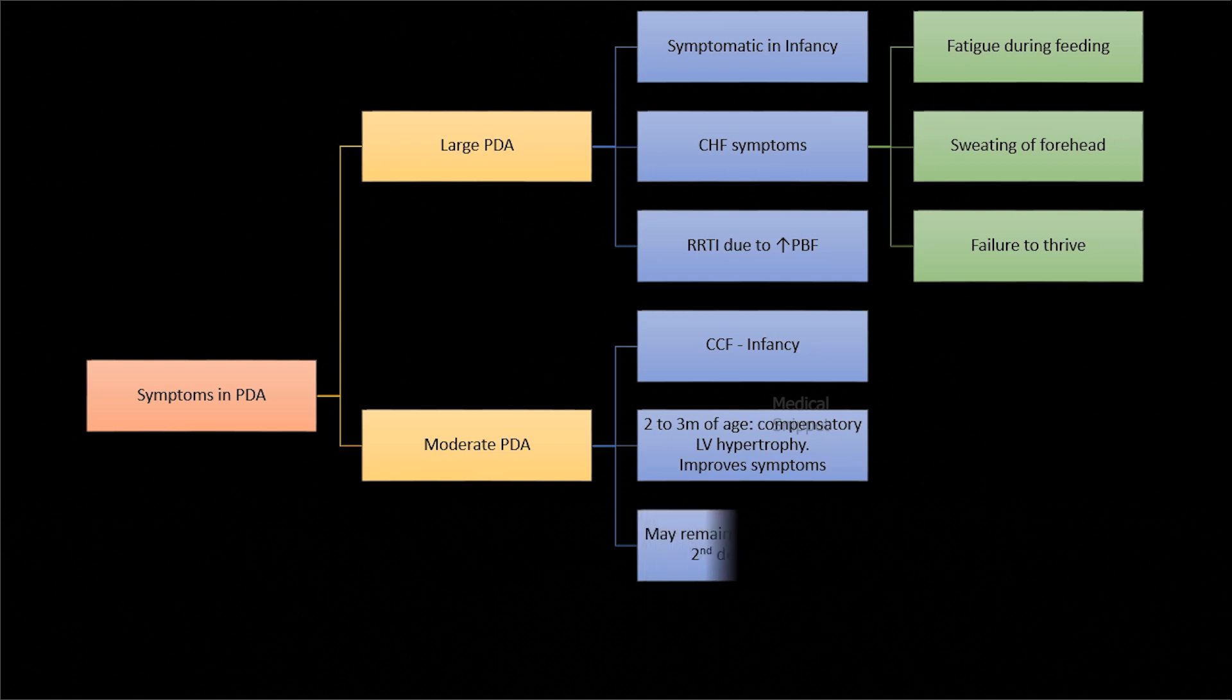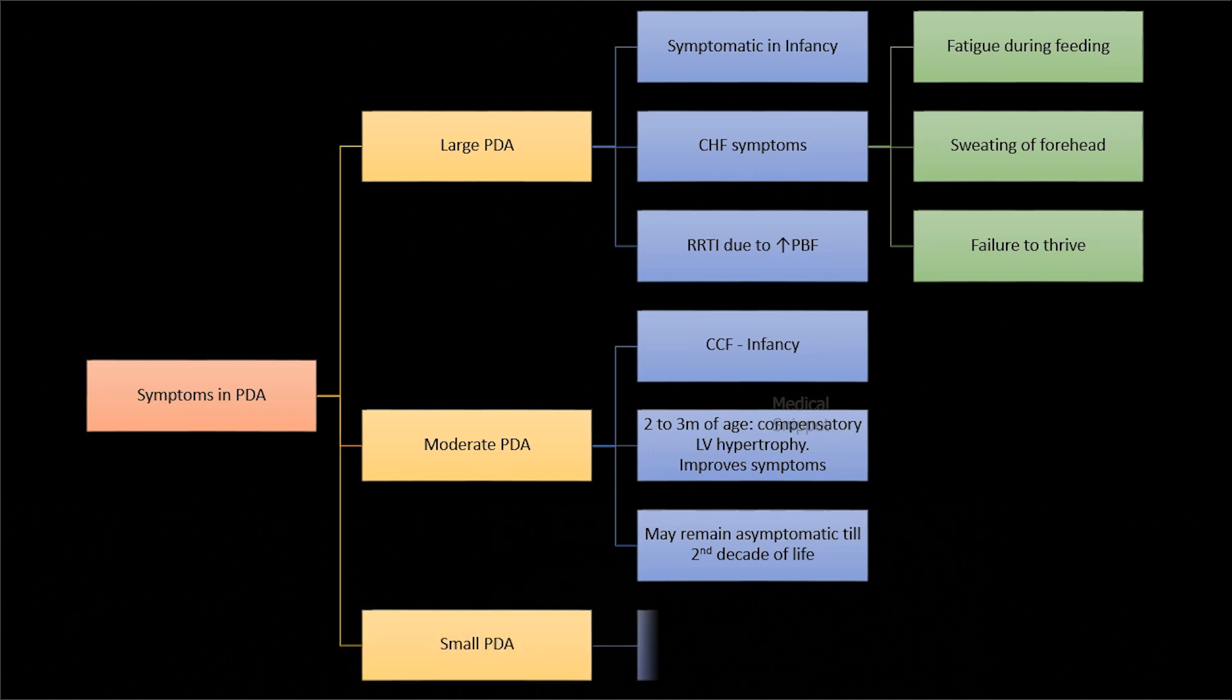Patients can remain asymptomatic till the second decade of life. After that they can develop exertional dyspnea and fatigue. Small PDA are usually asymptomatic.